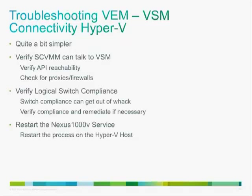For VEM troubleshooting on Hyper-V, because the config is so much simpler, troubleshooting is also much easier. Verify SCVMM can talk to the VSM by checking API reachability and looking for proxies or firewalls. SCVMM keeps a logical switch compliance record — if it's not compliant, click the Remediate button and SCVMM will reset everything to the correct state. If you're having issues with the VEM, find the Nexus 1000V process in Windows services and restart it.